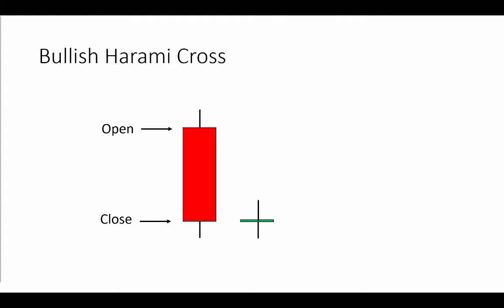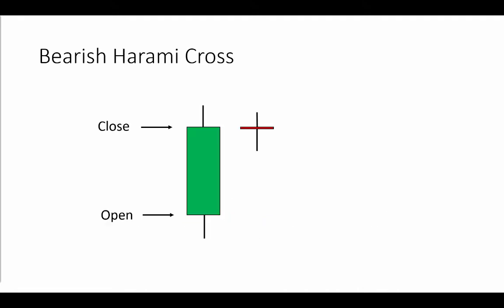The harami cross is a more restrictive version of the bullish harami. The two prior bars are again down closes, the prior bar is a large body bar, and the current bar is now a doji — just a cross or extremely small body — contained within the large body. And vice versa for the bearish harami cross.